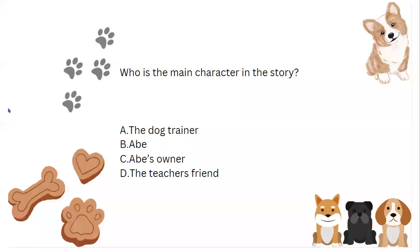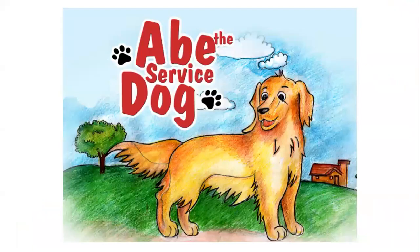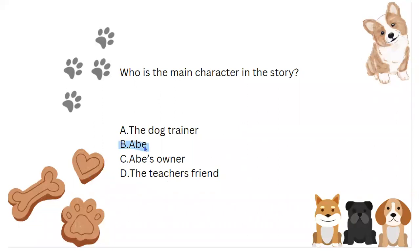Okay, students, take a look at our last question. We were talking about the character and the main character. Who is the main character in this story? Is it A, the dog trainer; B, Abe; C, Abe's owner; or D, the teacher's friend? I'm going to give you guys some thinking time. Good job, students — the answer is B. It's about Abe, right? A big clue for this answer is in our title: Abe, the Service Dog. He is the main character of this story. Abe is the main character — that is who the story is mostly about.